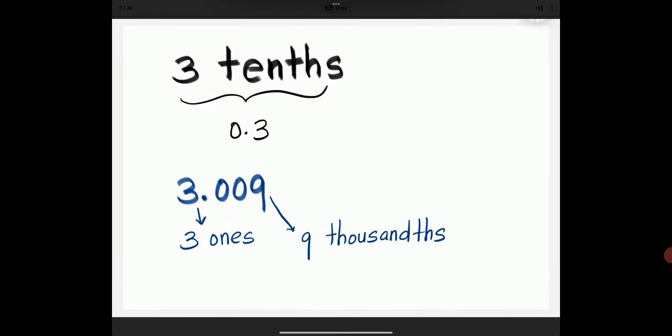3 tenths is 0.3. 3.009 has 3 ones and 9 thousandths in it.